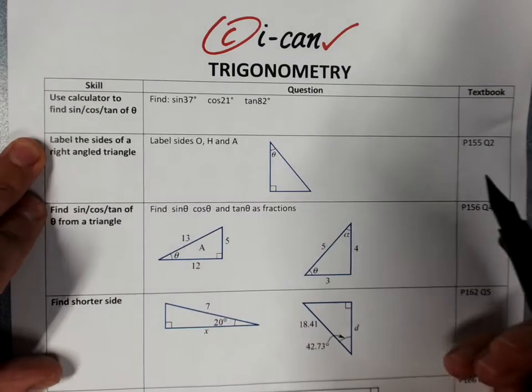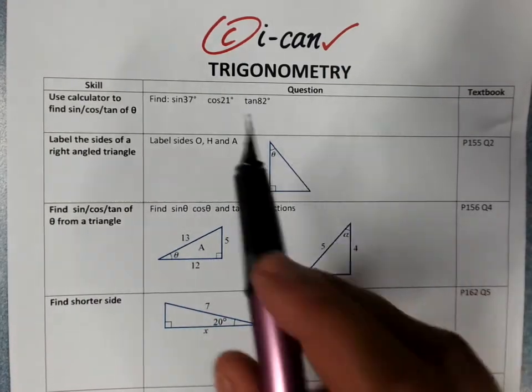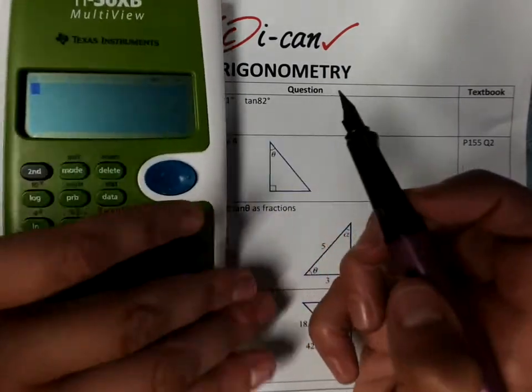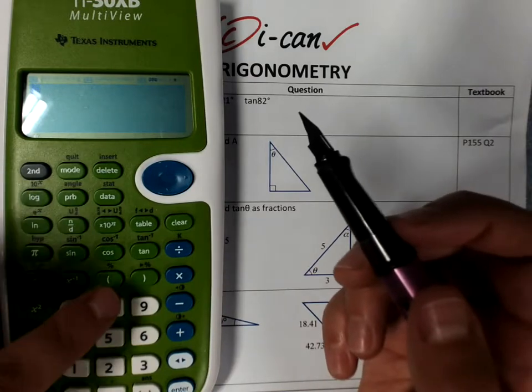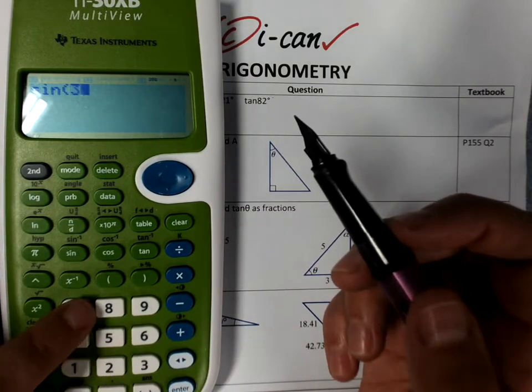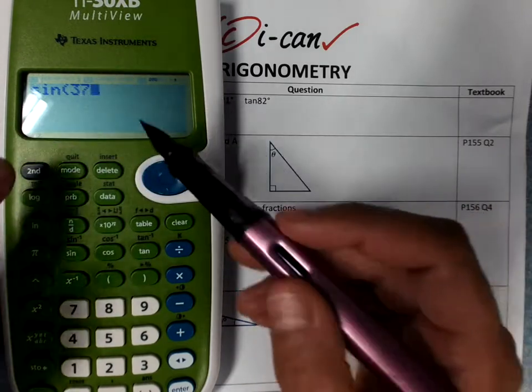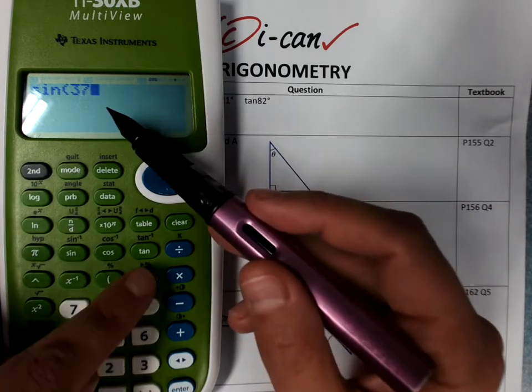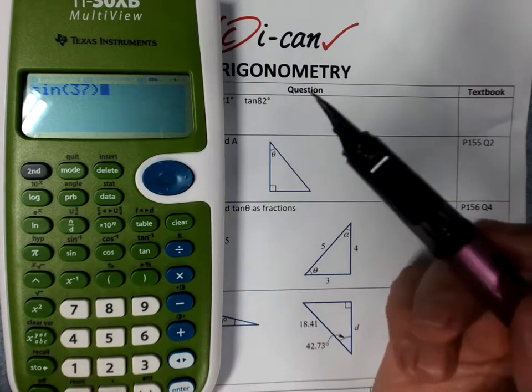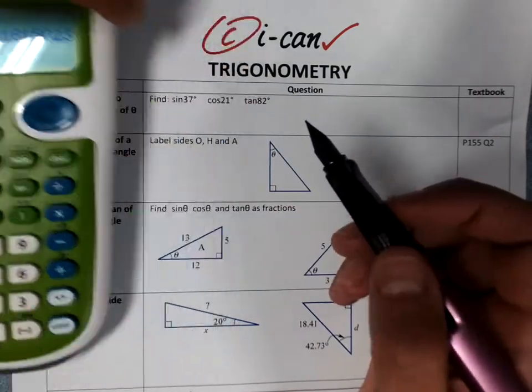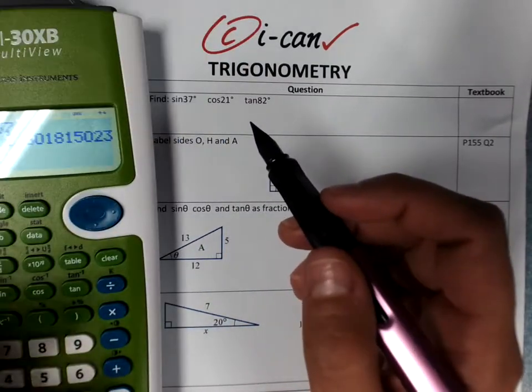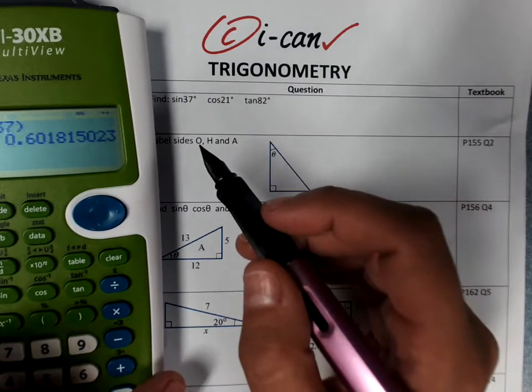Use the calculator to find sine, cos, or tan of an angle. So sine 37 degrees, simply on the calculator, sine 37. Do double check that your calculator is in degrees. You don't need to put a degrees symbol in. You don't even need to end the brackets, but let's be careful about it. And write it down.